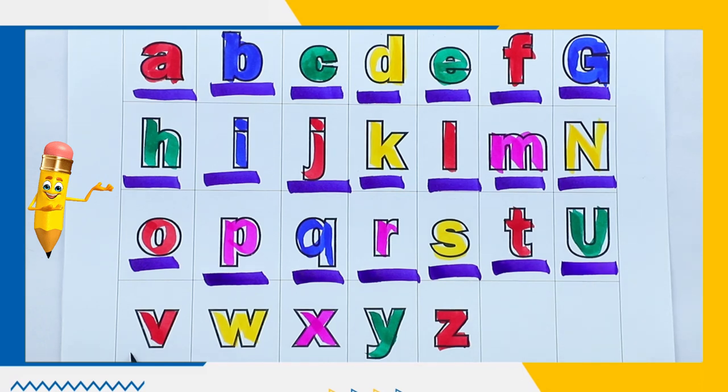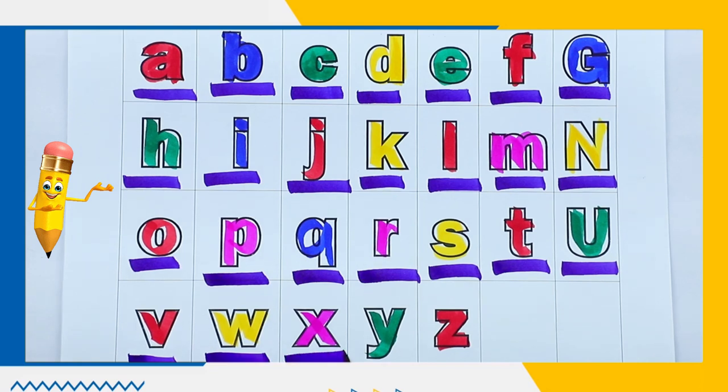U. U for umbrella. V. V for wind. W. W for watch. X. X for x mastery. Y. Y for yard. Z. Z for zebra.